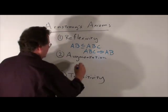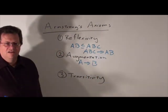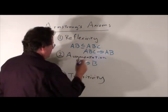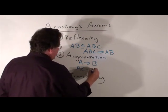Augmentation is the following. Let's say we had A function determines B as a given, and A and B are attributes. We can add attributes like C or D to both sides, and that would still be a valid functional dependency.